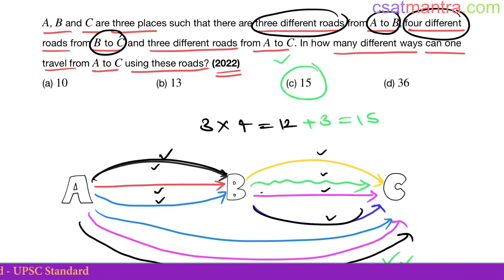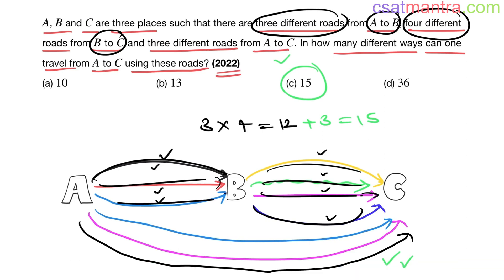Three roads times four choices equals 12, and these three direct roads make it 15. Answer C.